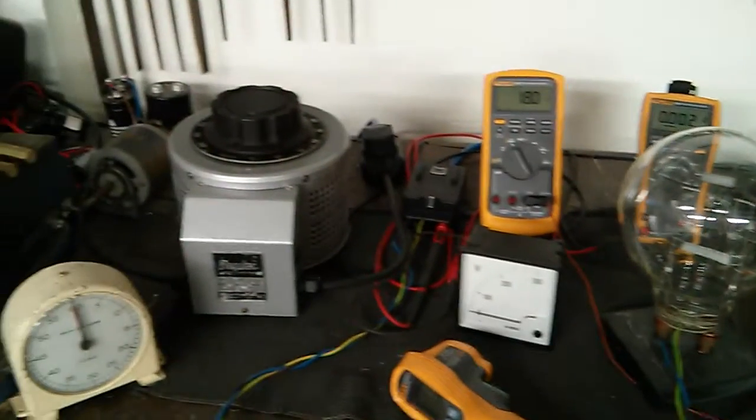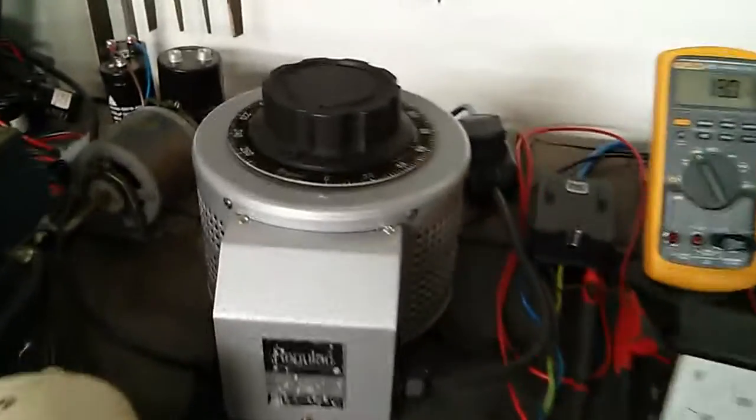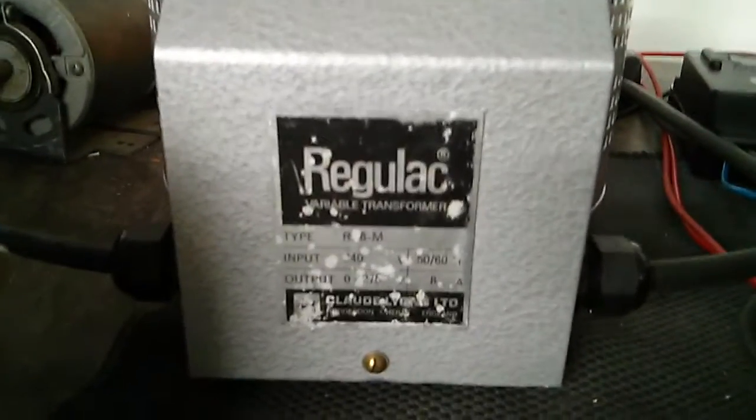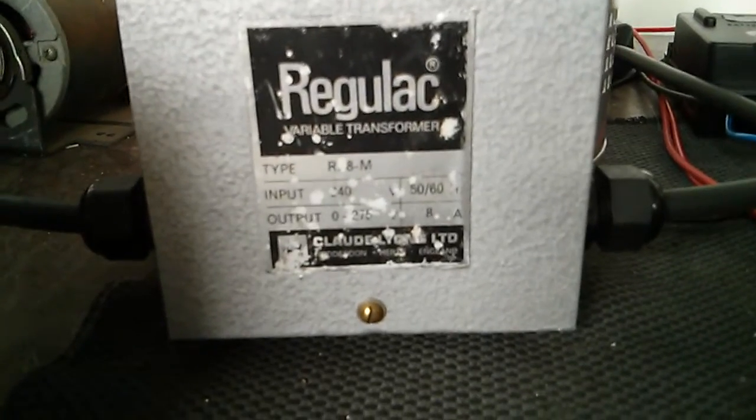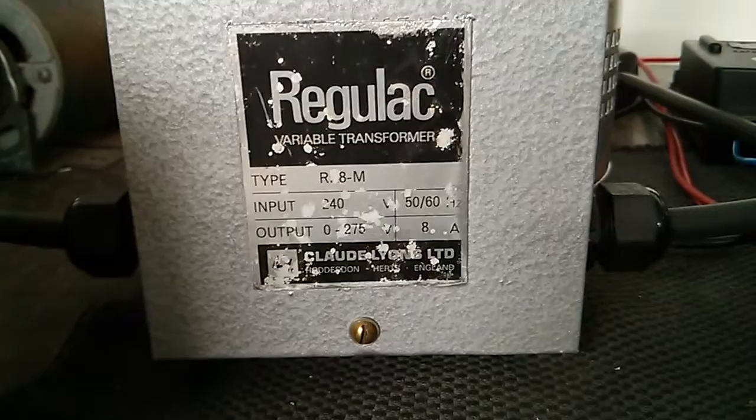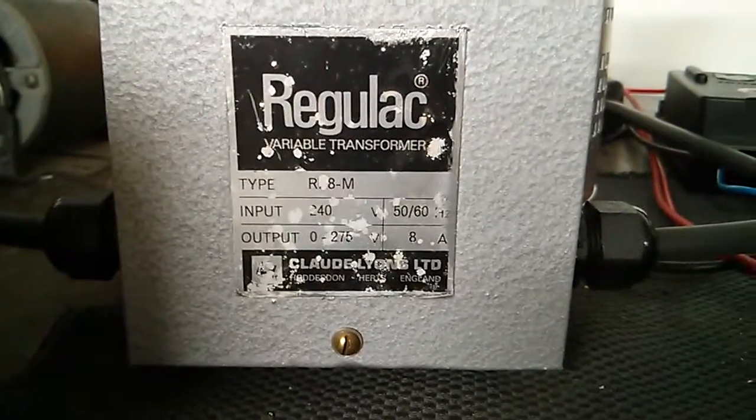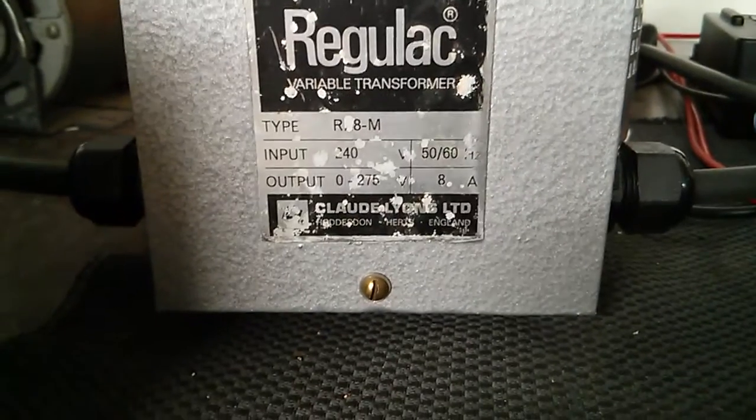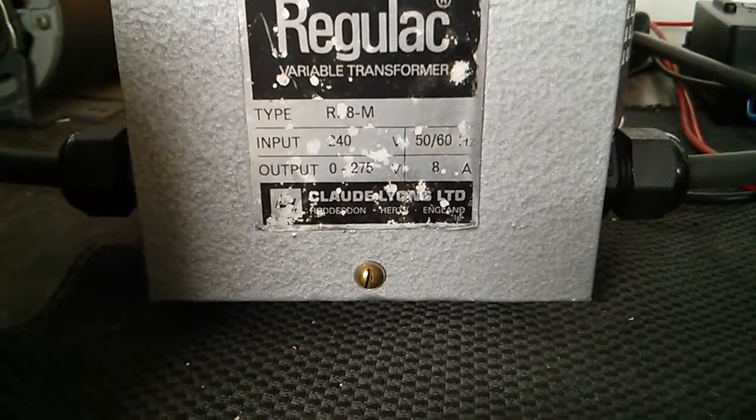OK guys, well today I'm going to be doing a load test of this variac here. It's a variac I restored a while ago for John. It's a Claude & Lyons Regulac. It's an 8 amp model. It's actually RK8-M. The model type has actually rubbed off the K there, but that is a K under there. 240 volts in, 0 to 275 volts out.